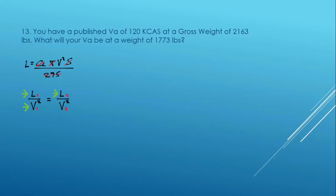This is a change in speed for a change in weight to give you the same conditions. In this case, it's VA. So we've given a published VA of 120 knots at a gross weight of 2,163 pounds. What will your new VA be at a lesser weight? You would expect the VA to go down.